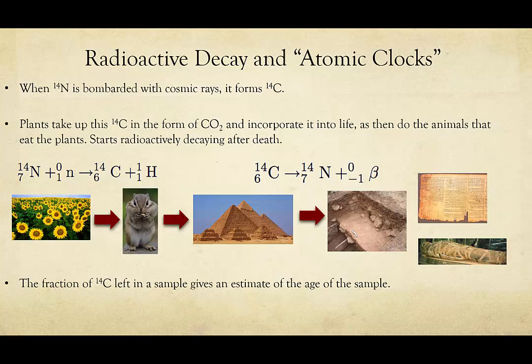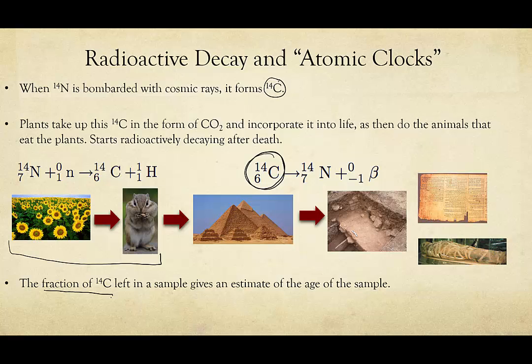Now let's talk about carbon dating. When nitrogen is bombarded by cosmic rays, it can turn into carbon-14. Notice that normal carbon is carbon-12. A certain percentage of carbon-14 will exist within living systems at a given time in history. Plants take up this carbon in the form of CO₂ and incorporate it into their life. Animals eat the plants, so all things that were once living end up with a certain percentage of carbon-14 — along with carbon-12. Once those systems die, the carbon-14 starts to decay. So we can tell how old something is by looking at the amount of carbon-14 present compared to what we would have expected. We use the fraction of carbon-14 left to give an estimate of the age of the sample.